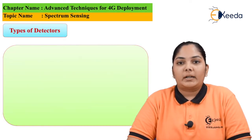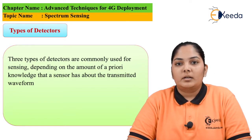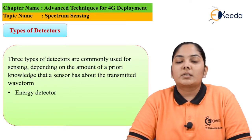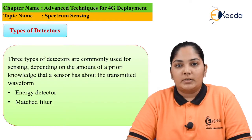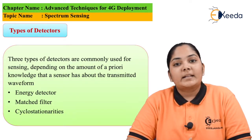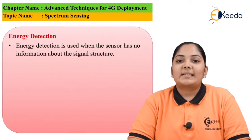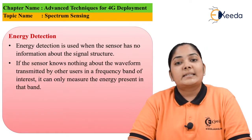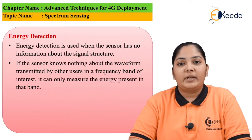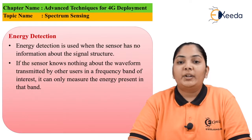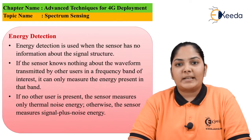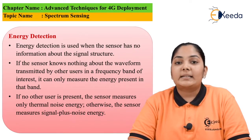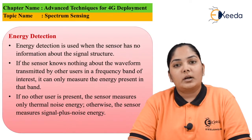To identify or sense the spectrum, there are other methods available using detectors. Detectors help identify the frequency bands. There are three types of detectors: the first is the energy detector, then we have matched filters, and finally we have cyclostationarities. Energy detection is used when the sensor has no information about the structure of the waveform. If there is no signal present, the sensor measures only the thermal noise. If the signal is present, the sensor measures signal as well as the thermal noise.